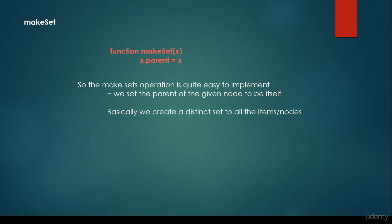What about the make set operation? These operations are very easy to implement. The make set is going to assign a distinct set to each of the items. We are going to talk about vertices sometimes. So we have the X — it can be an item, it can be a vertex of a graph — but basically we set the parent to be itself. So we create a distinct set for all the items.